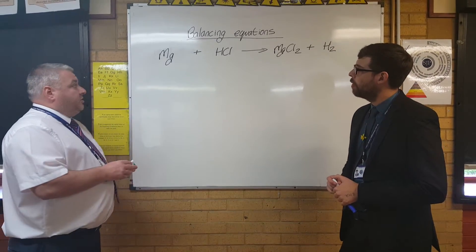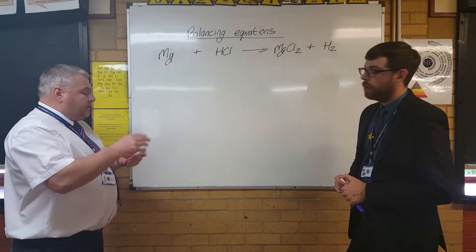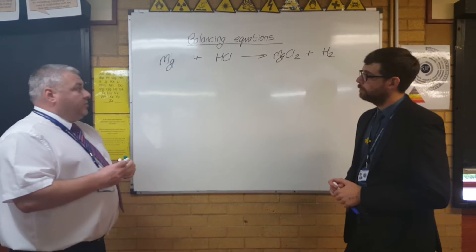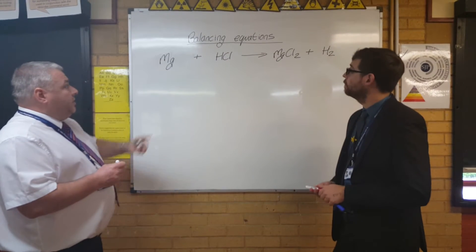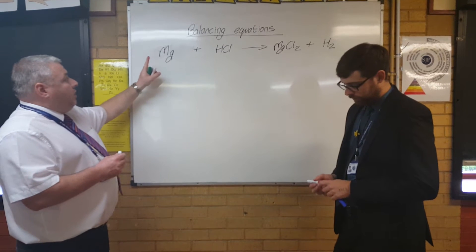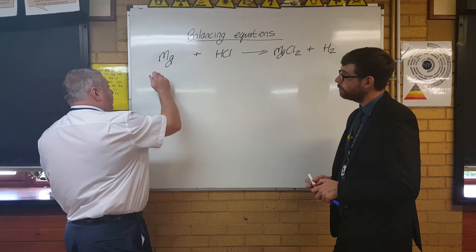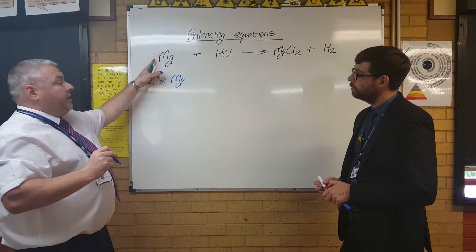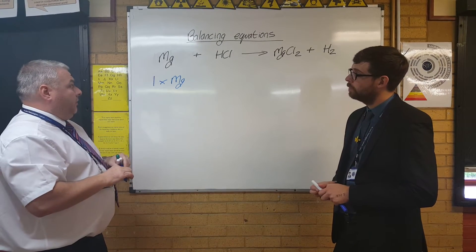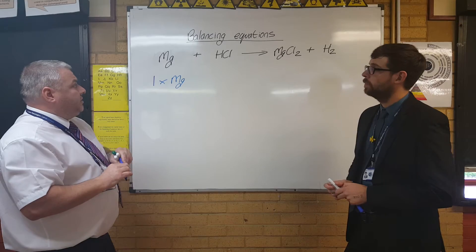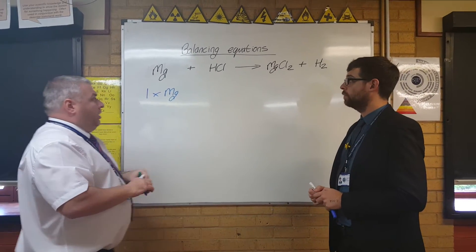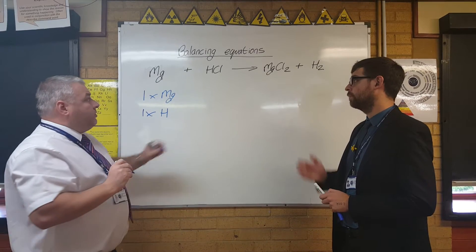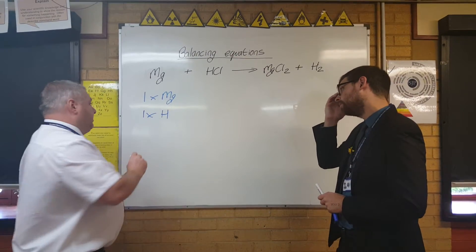The first step when you balance an equation is to keep a record of how many of each type of atom you've got on each side of the equation. On this side we've got one magnesium — if there's no number in front of it, it means it's a number of one. So we've got one magnesium atom. We've also got one hydrogen atom and one chlorine atom.